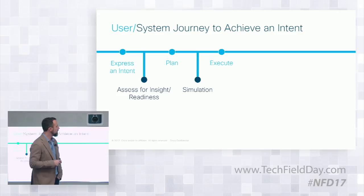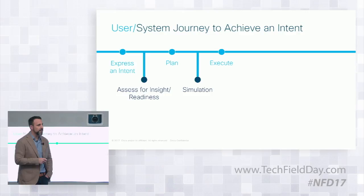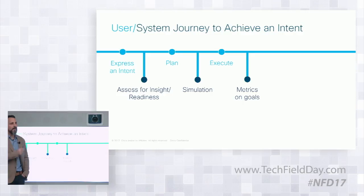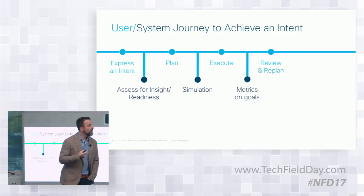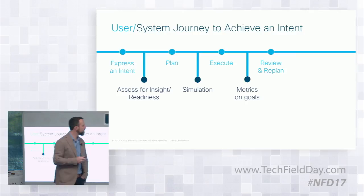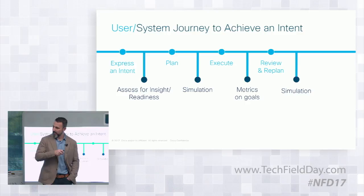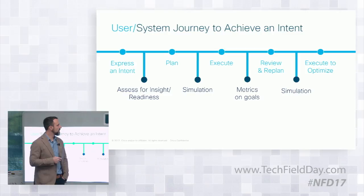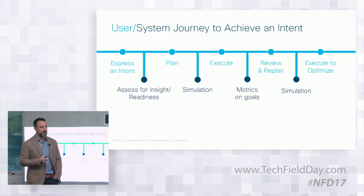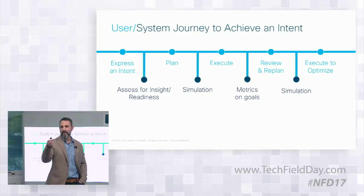Then comes actual execution — introducing the change into the network. Followed by measurement — understanding what you set out to do and measuring those changes. Then a review phase: some things worked, some didn't, some weren't optimized — so you go back to the plan, make tweaks, and address unexpected outcomes whether positive or negative. Then simulation again with pre-checks before making another change, and execution against the optimization.